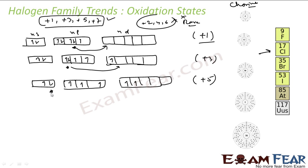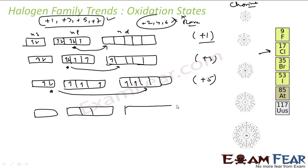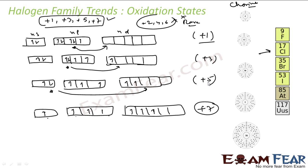Moving this electron from here to this place, what we get is 1, 2, 3, 4, 5, 6, 7 unpaired electrons that account for plus 7 oxidation state. And thus we generally have plus 1, plus 3, plus 5, and plus 7 — together with minus 1 and 0 — as the common oxidation states for halogens.